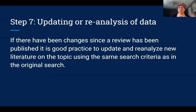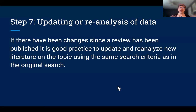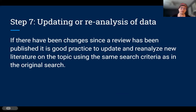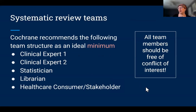Step seven is not necessarily part of the initial process, but if there have been changes in the topic or another systematic review with reproducible descriptions has emerged, it may be a good idea to rerun that review because things have changed. Doing that is really good practice, especially if there's been a big change in evidence-based practice — that updated literature should get out there so people know the old approach is no longer current.